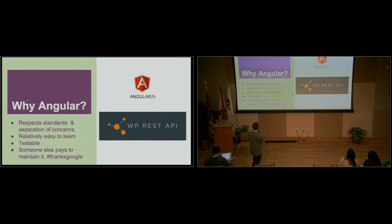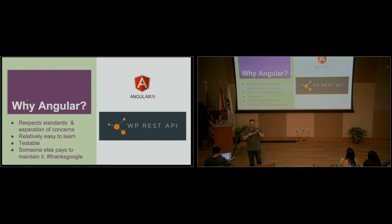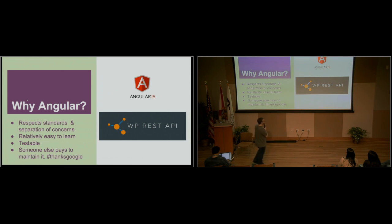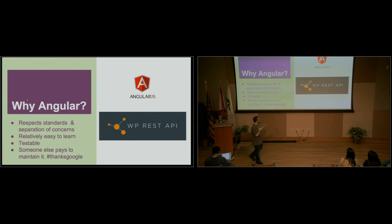Why Angular? I like the fact that it uses standards — it uses HTML5 for its templating system and data binding. It's not reinventing the wheel. If I want to add a class to an element, I type class equals double quotes, the name of the class, end quotes. I like the separation of concerns — my views are in an HTML file, and if there needs to be logic to get them to work in that view, that's in a JavaScript file. It's relatively easy to learn. If today's your first JavaScript day, this is not for day two — but if you've been doing the jQuery stuff, if you're a WordPress developer and you understand MVC, this shouldn't be too hard of a jump.